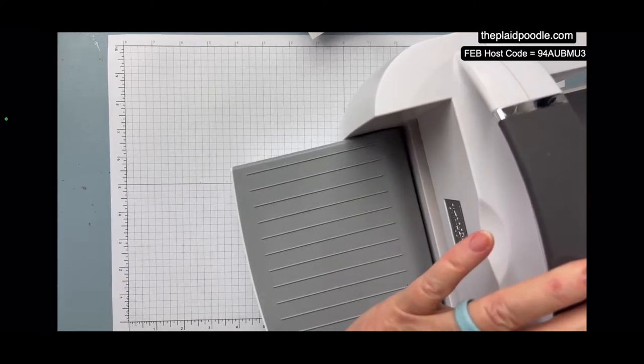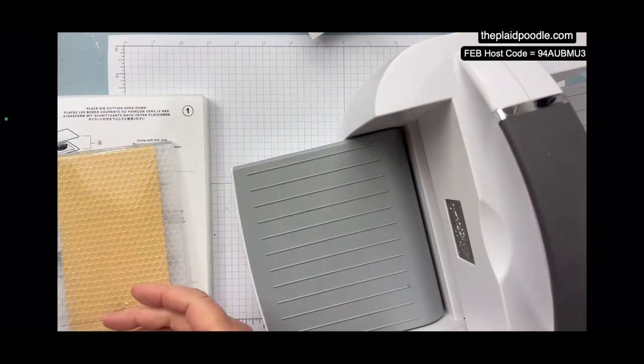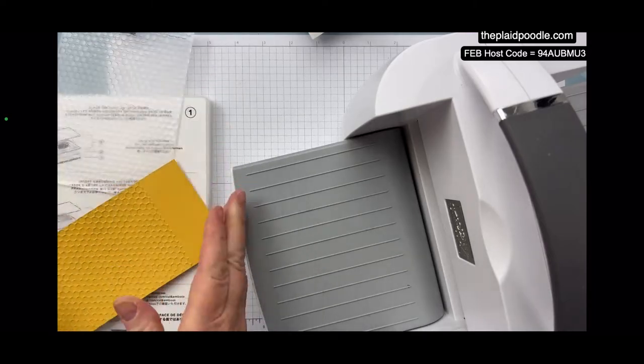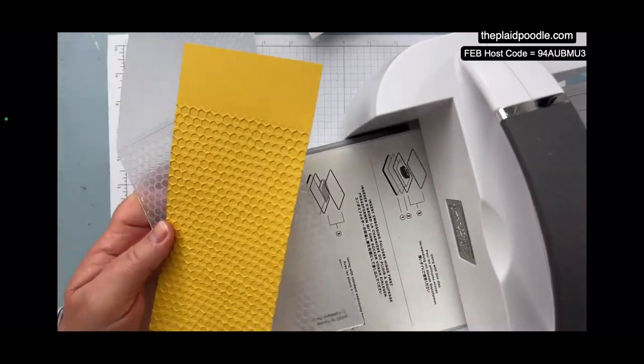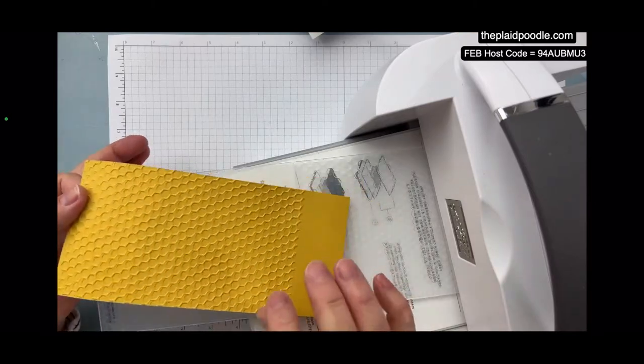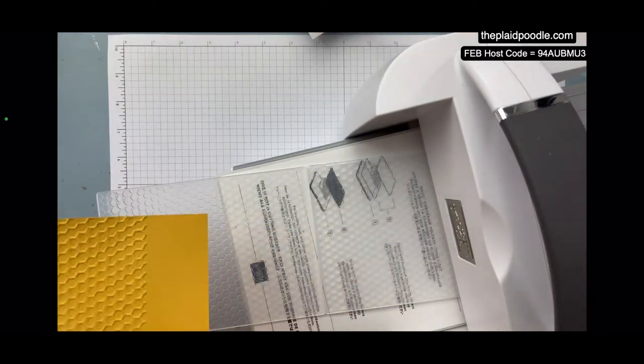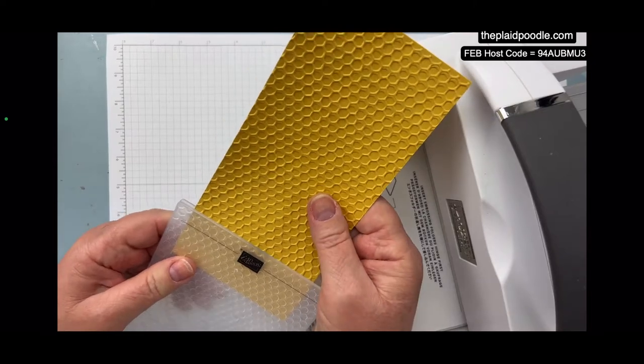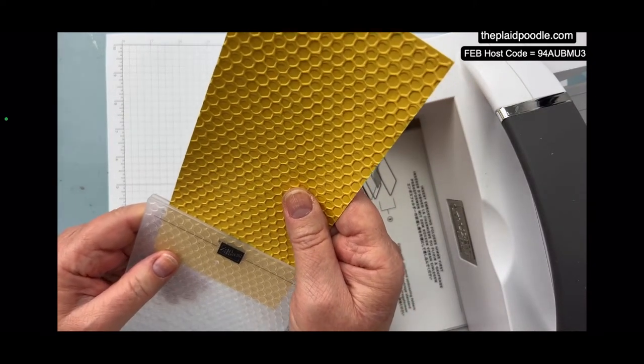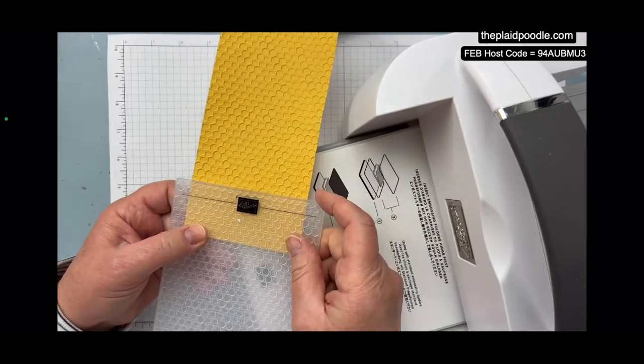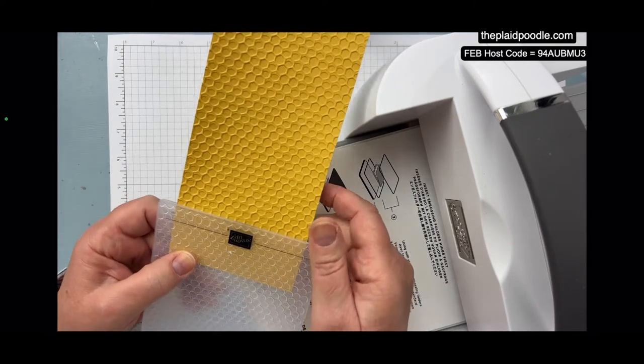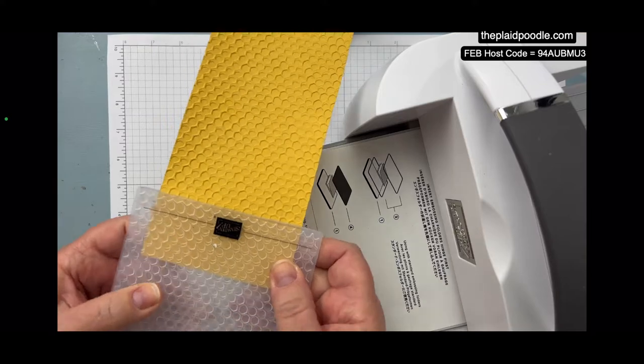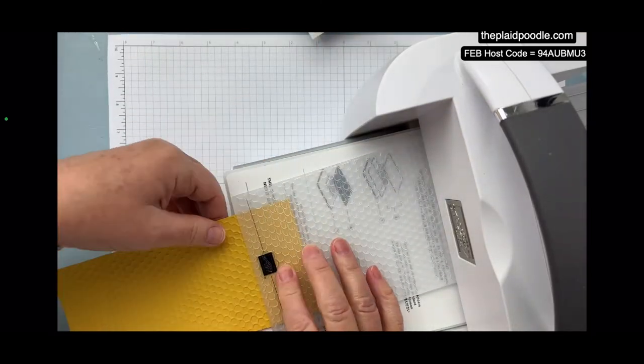Yes, the Stampin' Up slimline envelopes are—I should order some, they do look beautiful. Okay, now I've got this little blip here at the end. And it's not going to show that much because this is a really busy pattern. Now you might have a pattern that's more precise, that it would make a difference. So I would strategically place that somewhere where I might have a sentiment tag, or you could wrap a ribbon around it.